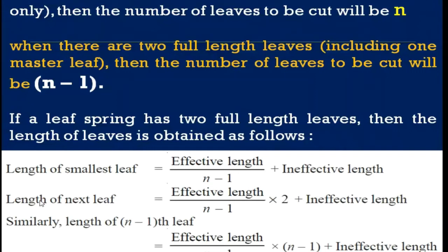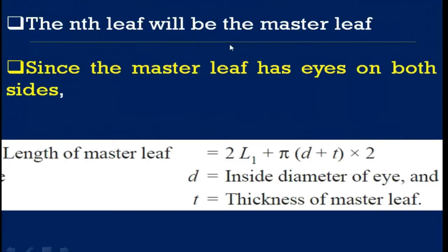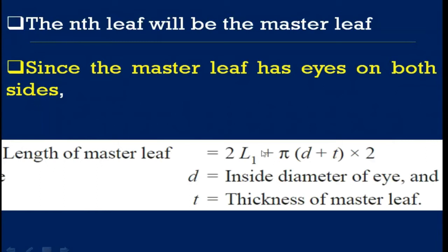The last calculation is for the master leaf, the nth leaf, which has eyes on both sides. The length of the master leaf equals 2l1 (total length of the spring) plus π × d × t × 2, where d is the inside diameter of the eye and t is the thickness of the master leaf. This gives the outer circumference of both eye ends, and adding 2l1 gives the total length of the master leaf.